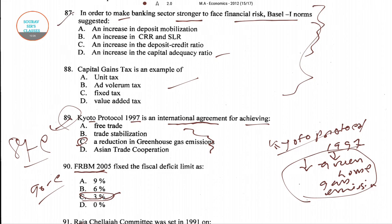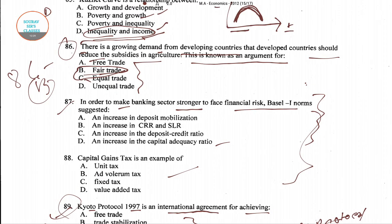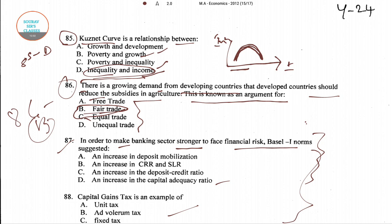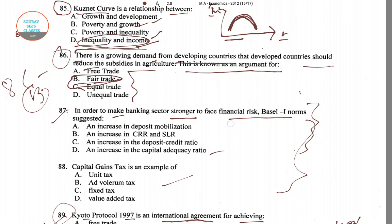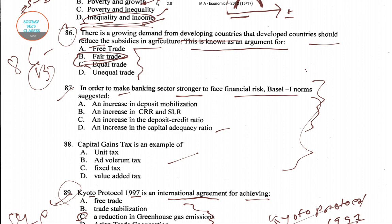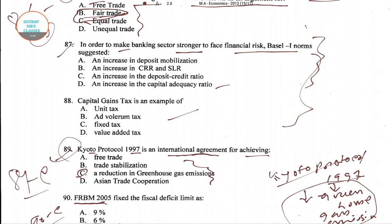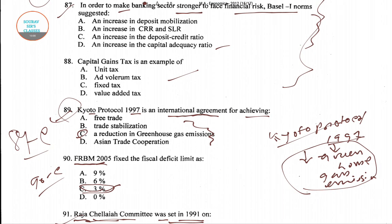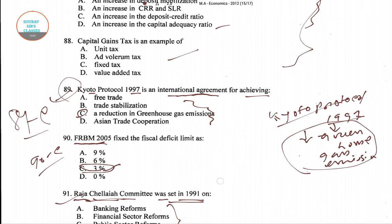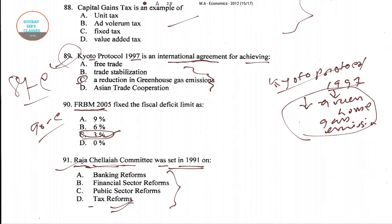Now let's review the questions we have done. The Kuznets curve is a relationship between inequality and income. There is a growing demand from developing countries that developed countries should reduce subsidies in agriculture — this is known as an argument for fair trade. The Kyoto Protocol in 1997 was an international agreement for achieving a reduction in greenhouse gas emissions. FRBM 2005 fixed the fiscal deficit limit at 3%. The Raja Chelliah Committee was set up in 1991 for tax reform.